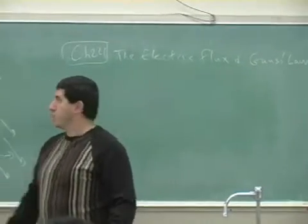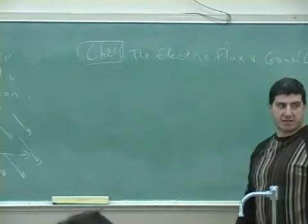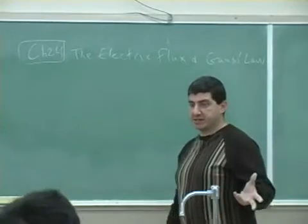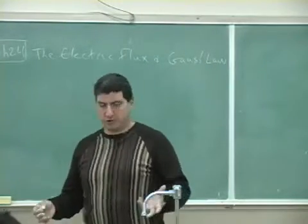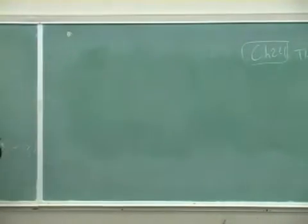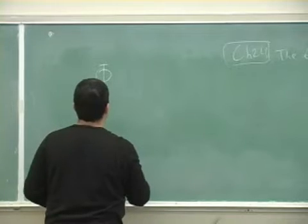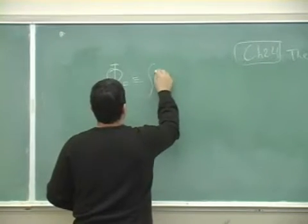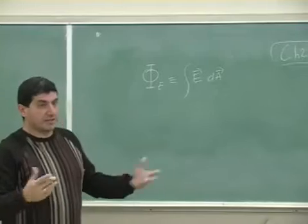Chapter 24 introduces something related to the electric field known as the electric flux. I'm going to show you what the electric flux is defined as, what it is, and then what Gauss's law is and what Gauss's law is used for. The electric flux symbol is the Greek letter phi — capital phi — and it is defined as the integral of E dotted into dA.